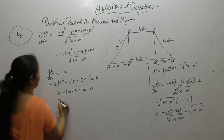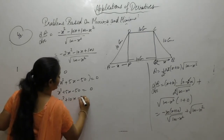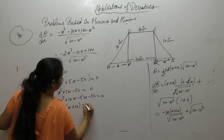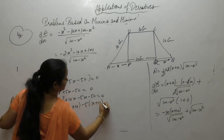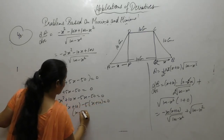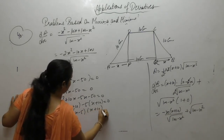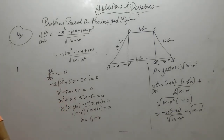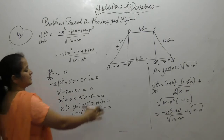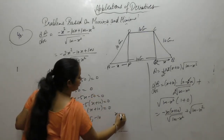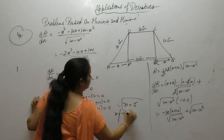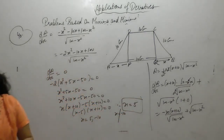Factorizing: (x minus 5)(x plus 10) equals zero. So x equals 5 or x equals minus 10. But x equals minus 10 is not possible since a side cannot be negative. Therefore x equals 5.